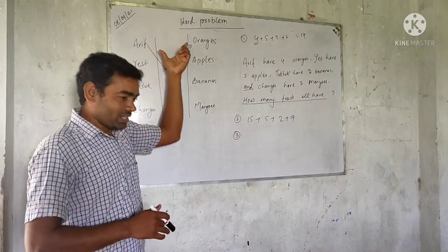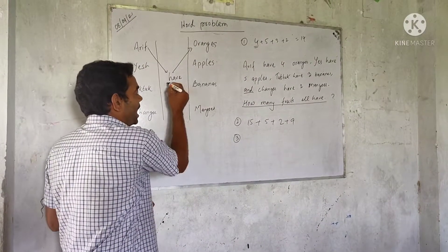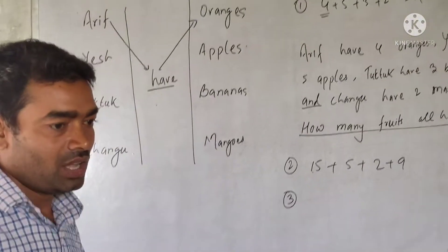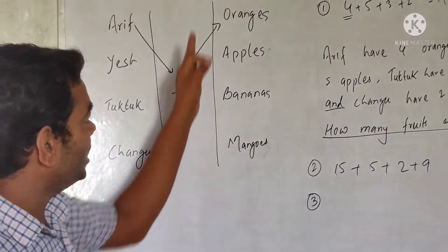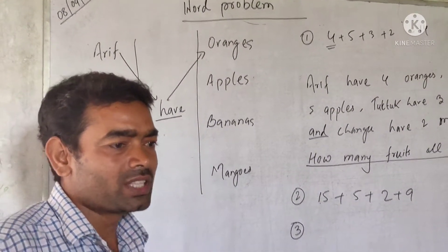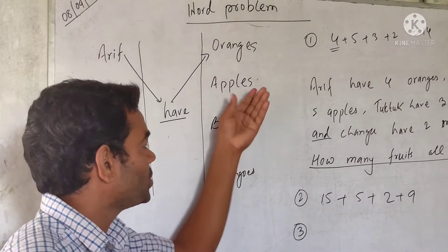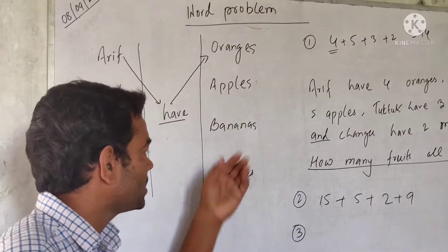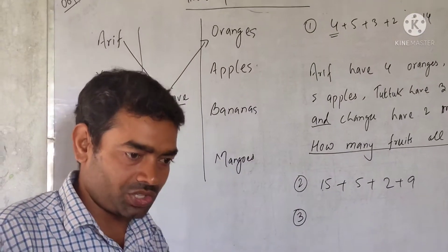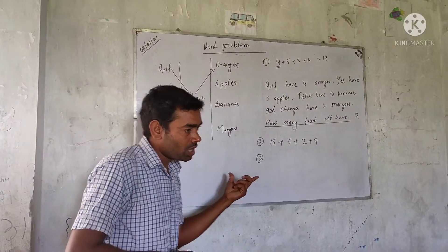In the second column, you have to write only 'have' — H-A-V-E. And in the third column, you have to put some fruit names like orange, apples, bananas, and mangoes. These are the names of the fruits.